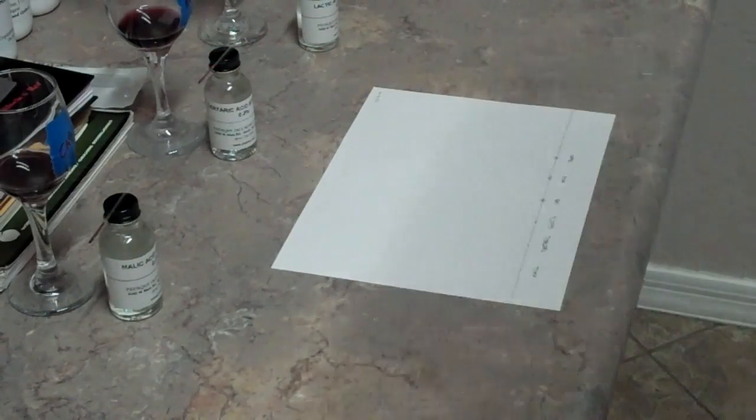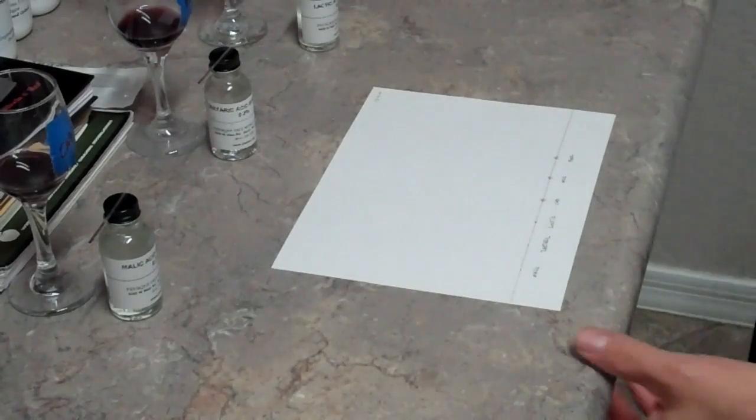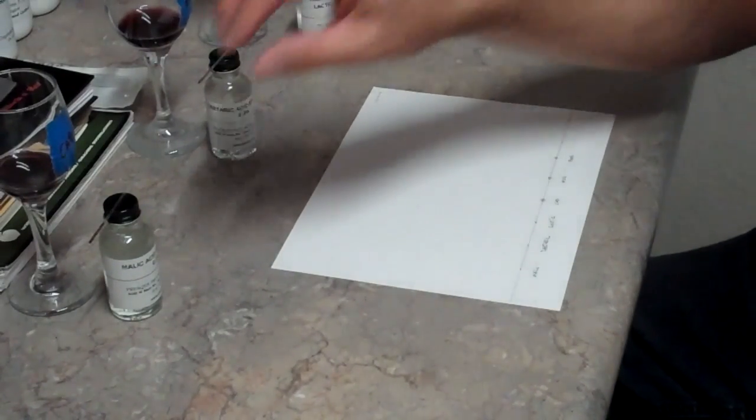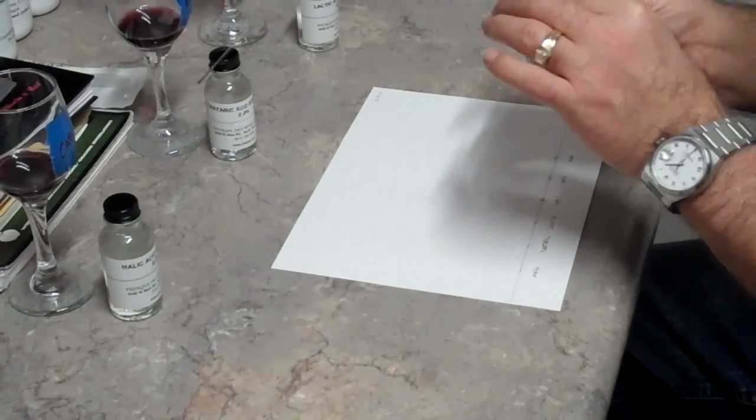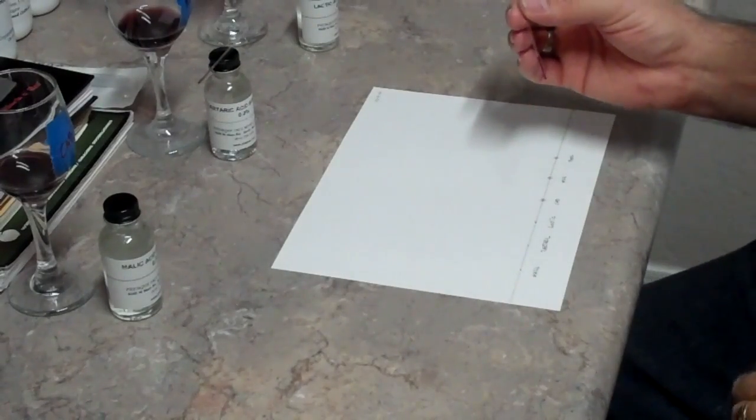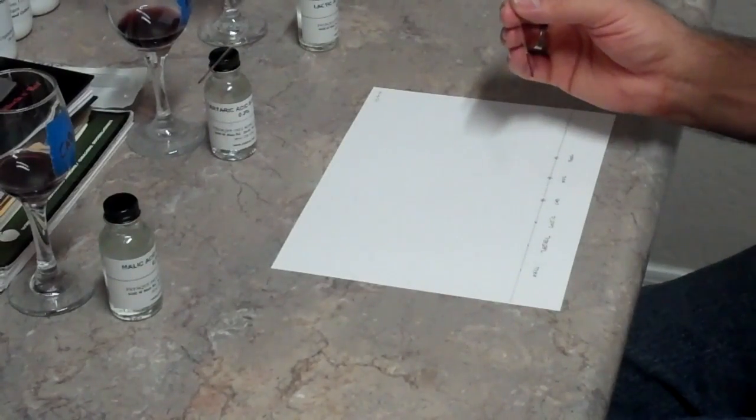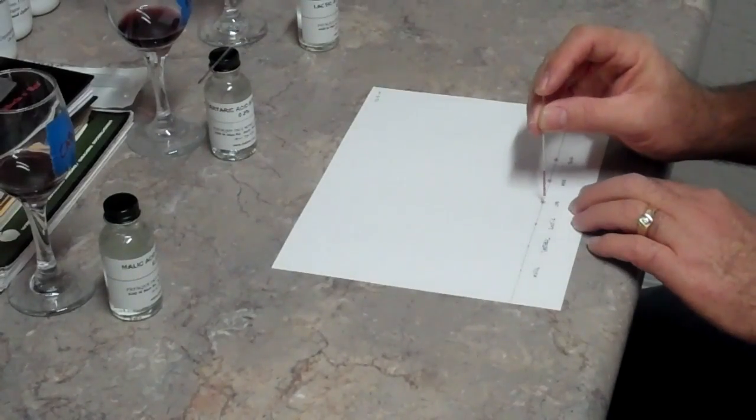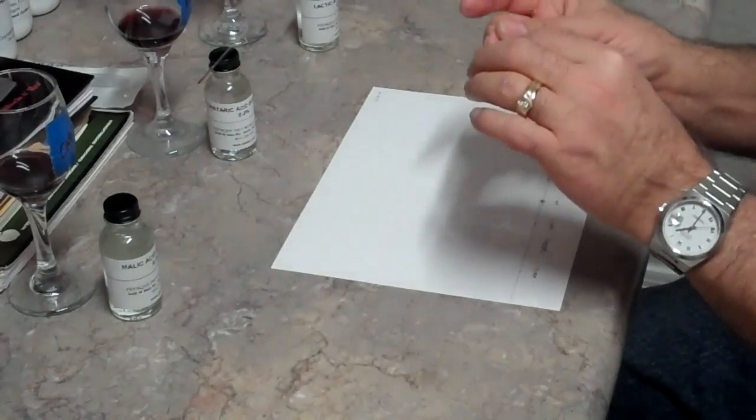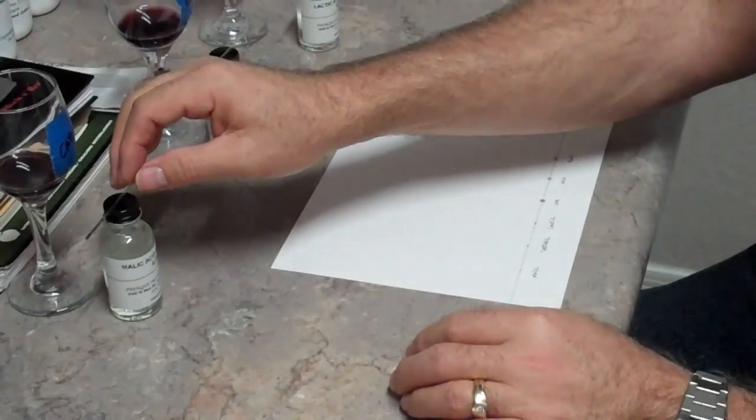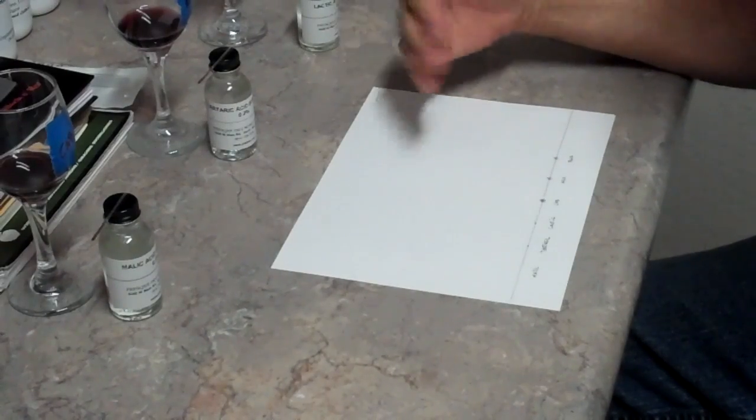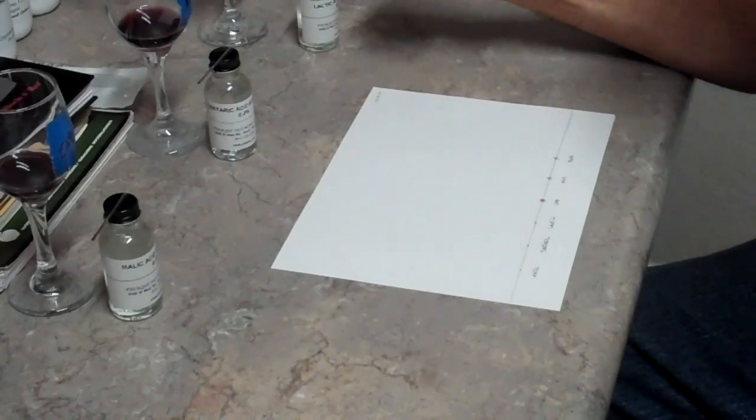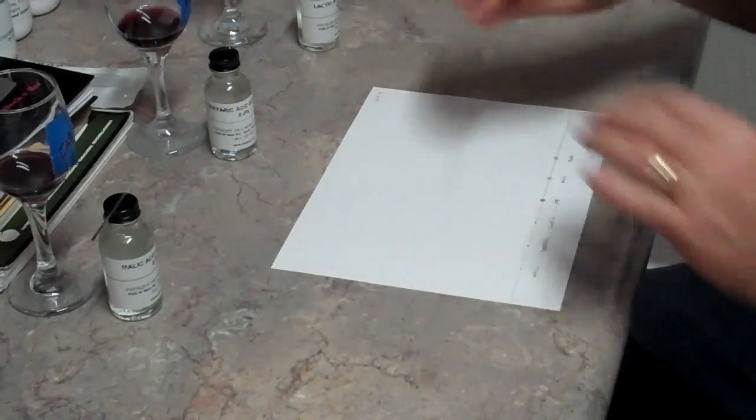Now we've drawn our samples from our wine, and we're going to start to apply those to the paper, just like we did our acid standards. This first dot here is the cab, and we're just going to do the same thing. We're going to dot it, and we're going to do that about four or five times also. We're going to let the whole thing dry for about 30 minutes after we've applied a dot of each wine.